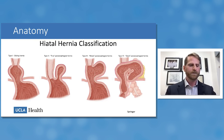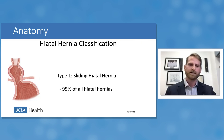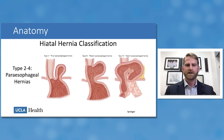There is a classification scheme for hiatal hernias, types one through four. Type one, the sliding hiatal hernia, is by far the most common, constituting 95% of all hiatal hernias. It involves circumferential disruption of the phrenoesophageal ligaments, allowing the stomach to slide cephalad into the chest, with resultant loss of the angle of His between the esophagus and the fundus.